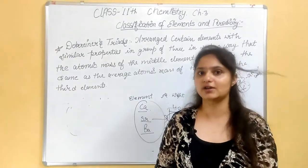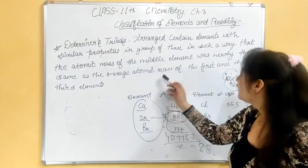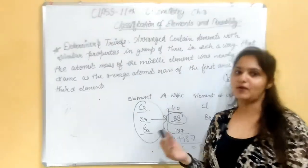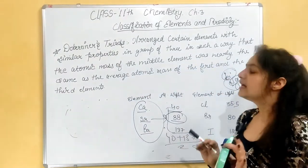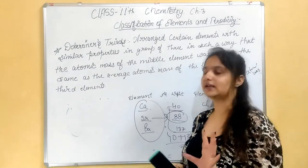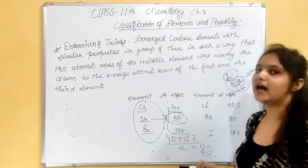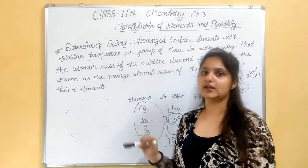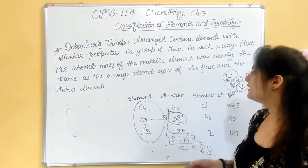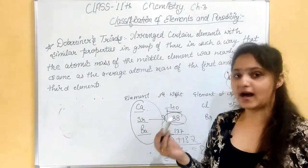This was the first triad given by Dobereiner for classification of elements. But it had some limitations. Grouping was possible only for certain elements according to Dobereiner's law. Some elements followed this law and fit in this grouping, but some elements didn't follow this law.